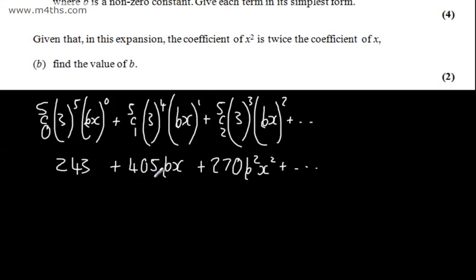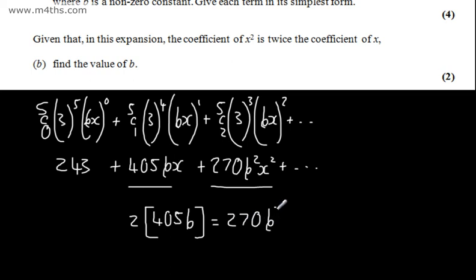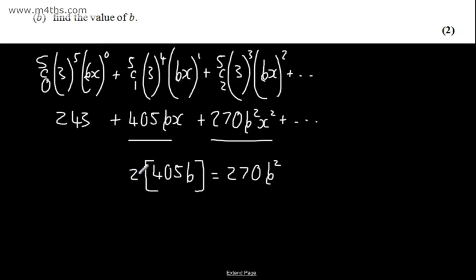So what I can say at this point, taking the term here and the term here, we can say that two lots of 405b will be equal to 270b squared. Given in the expansion, the coefficient of x squared is twice the coefficient of x. So all I've done here is written two lots of this one must be equal to this one. If we divide both sides by 270, we're going to end up with 3b equals b squared.